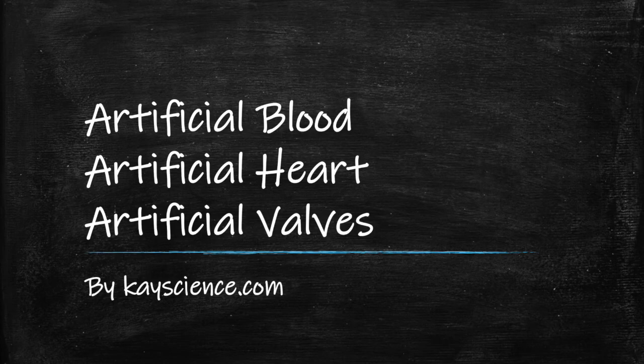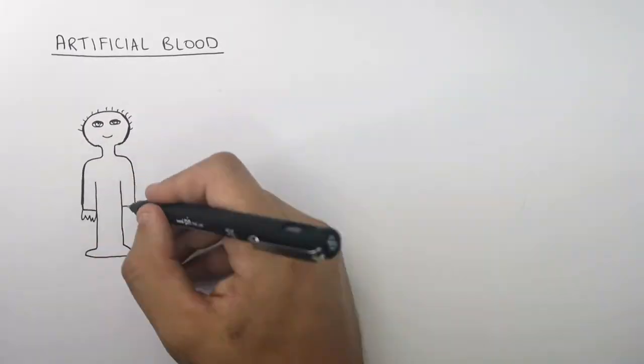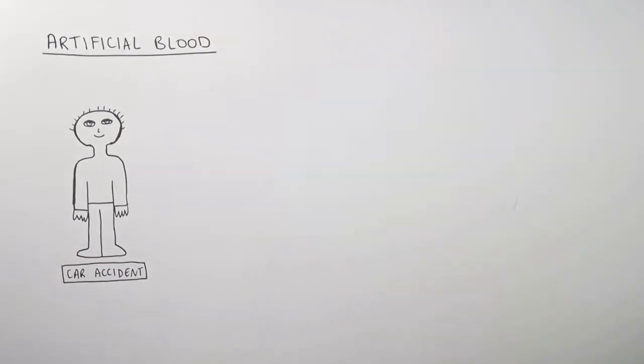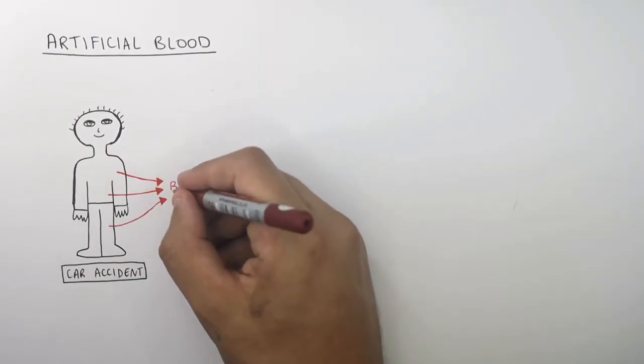Artificial blood, heart and valves by Kscience.com. This is a person and they've been in a car accident and they're quite injured. So they've lost a lot of blood.